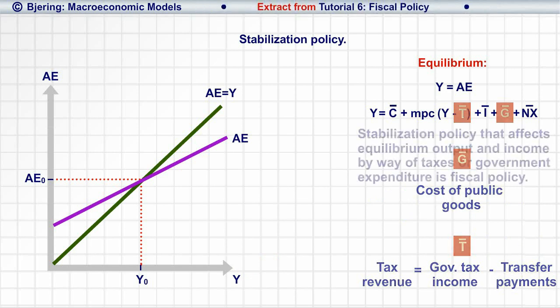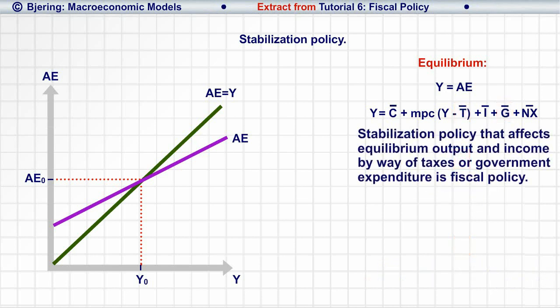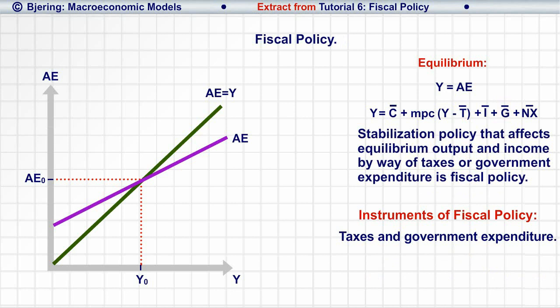Stabilization policy made up of taxes and government expenditure is fiscal policy. And tax revenue and government expenditure are instruments of fiscal policy.